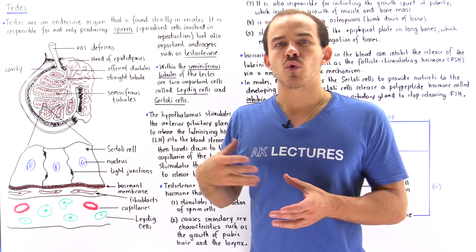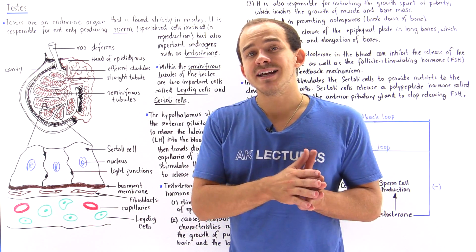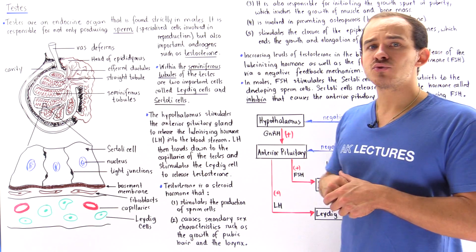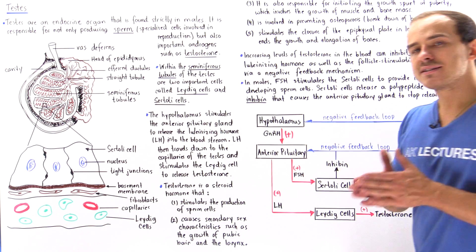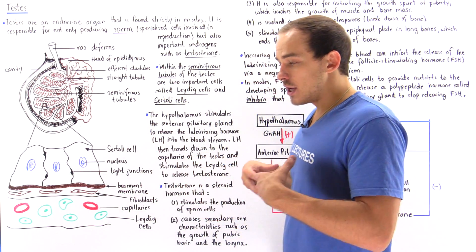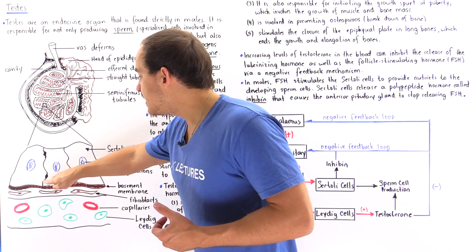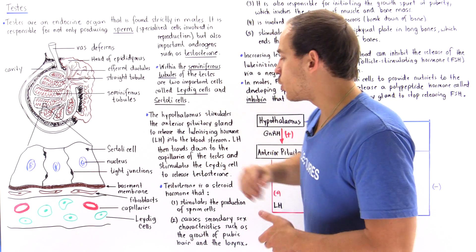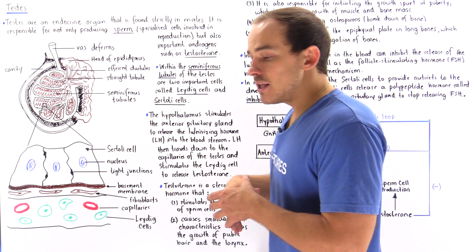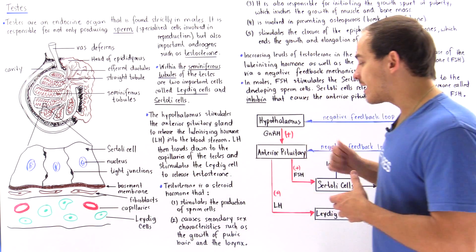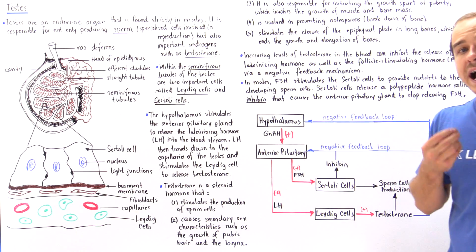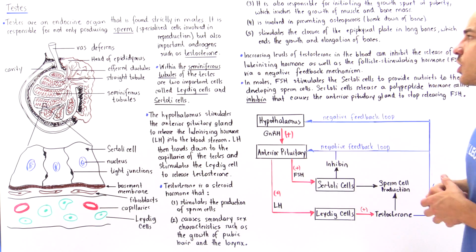LH stimulates the Leydig cells to release a special type of androgen known as testosterone. Testosterone is a steroid hormone, meaning it is lipid-soluble and can easily pass across the cell membrane of target cells — so the receptor proteins for testosterone are found inside the cell. Testosterone has many important functions: firstly, it stimulates and initiates the production of sperm cells inside the regions between our Sertoli cells. It also initiates secondary sex characteristics, including the growth of pubic hair, underarm hair, and it enlarges our larynx, giving us a deeper voice during puberty.